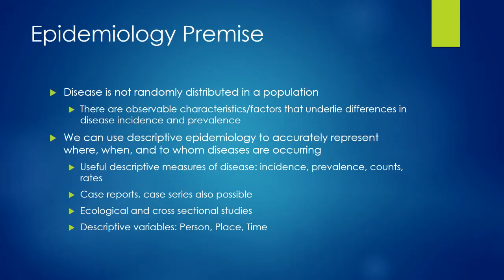We commonly use measures from module 1 — incidence, prevalence, counts, and rates. We might also use case reports or case series to better understand the ways diseases are occurring or who is being impacted. Ecological and cross-sectional studies are commonly called descriptive studies because they use one time point or look at groups of people to understand disease and disease prevalence.